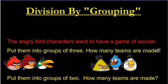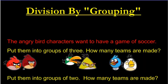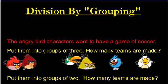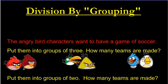Now it says how many teams are made, and we have two teams. The second part says put them into groups of two. We go groups of two, groups of two — and now how many teams are made? We have three teams.